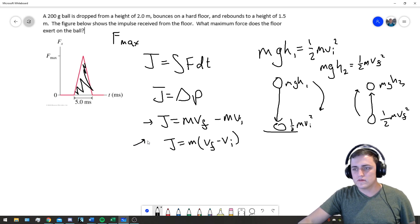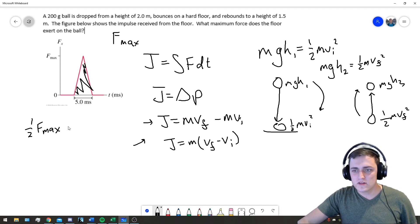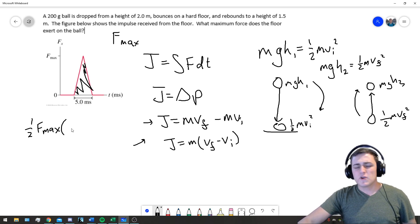Once we know what J is—it's mass times velocity final minus velocity initial—it's also the area under a curve. This is a triangle. The area of a triangle is one half times height F_max times width of 5 milliseconds. We're going to want to put that in seconds.